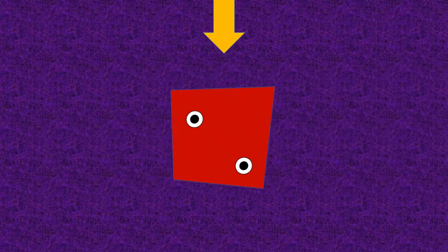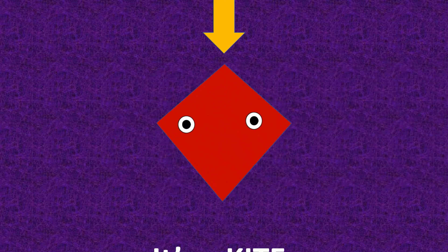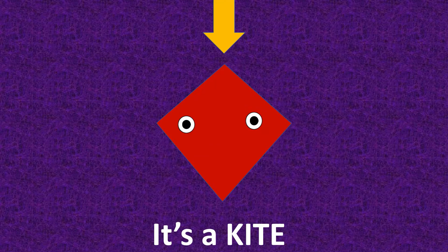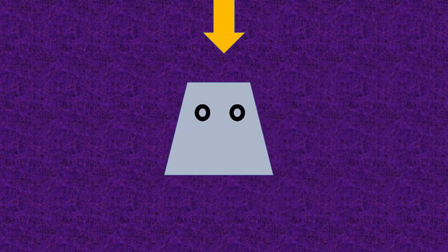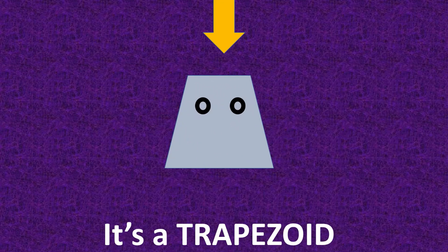What shape is it? It's a kite. What shape is it? It's a trapezoid.